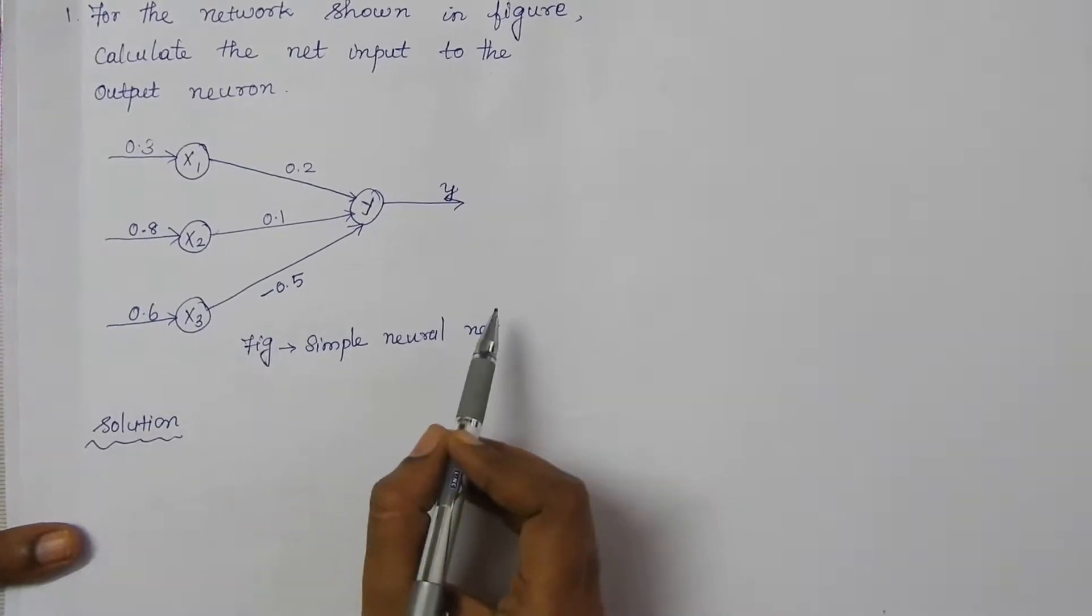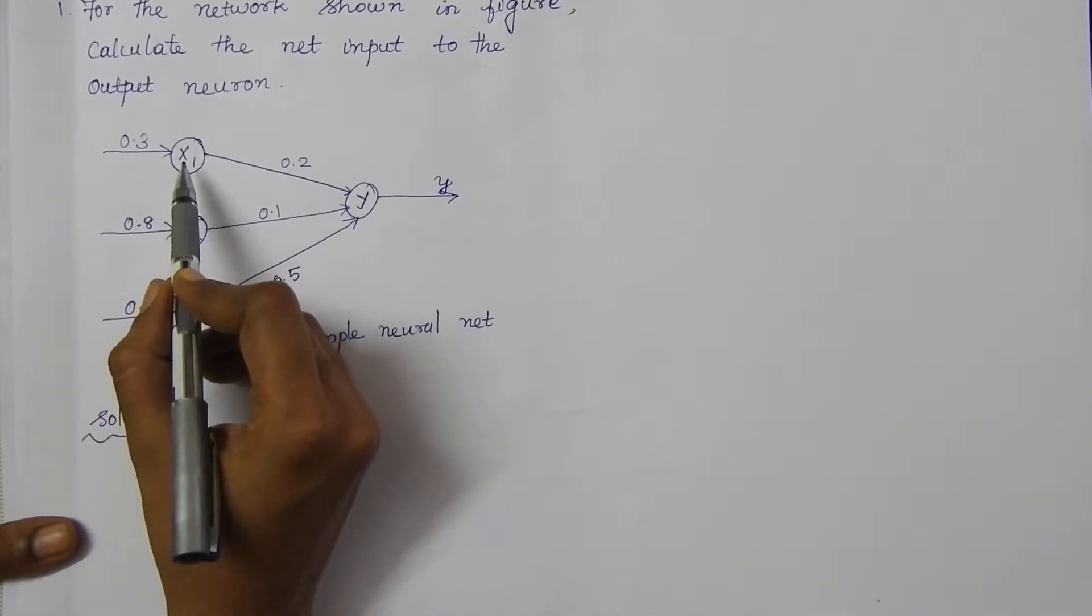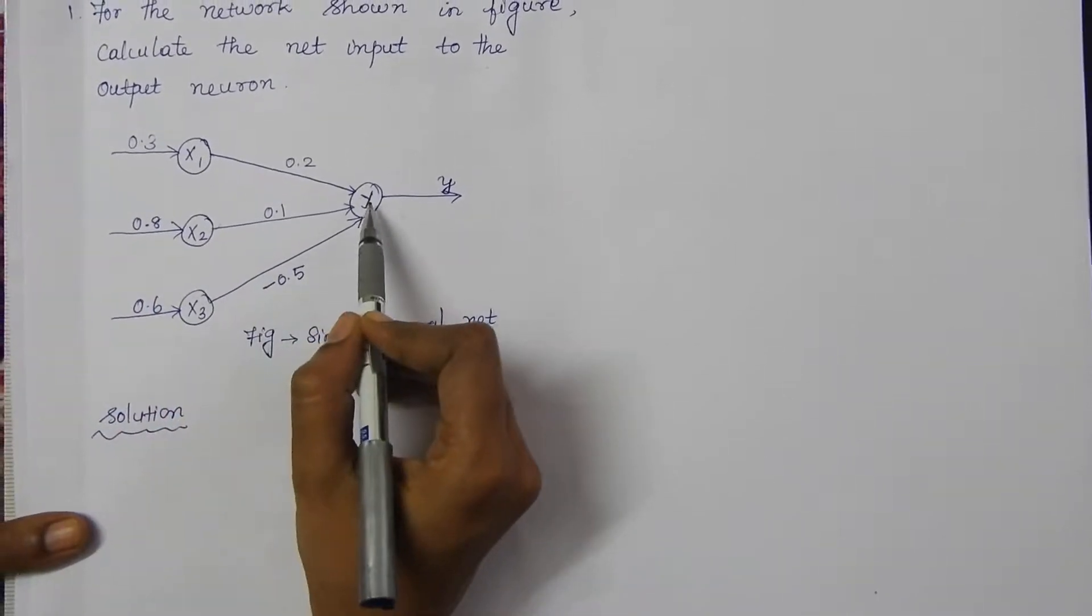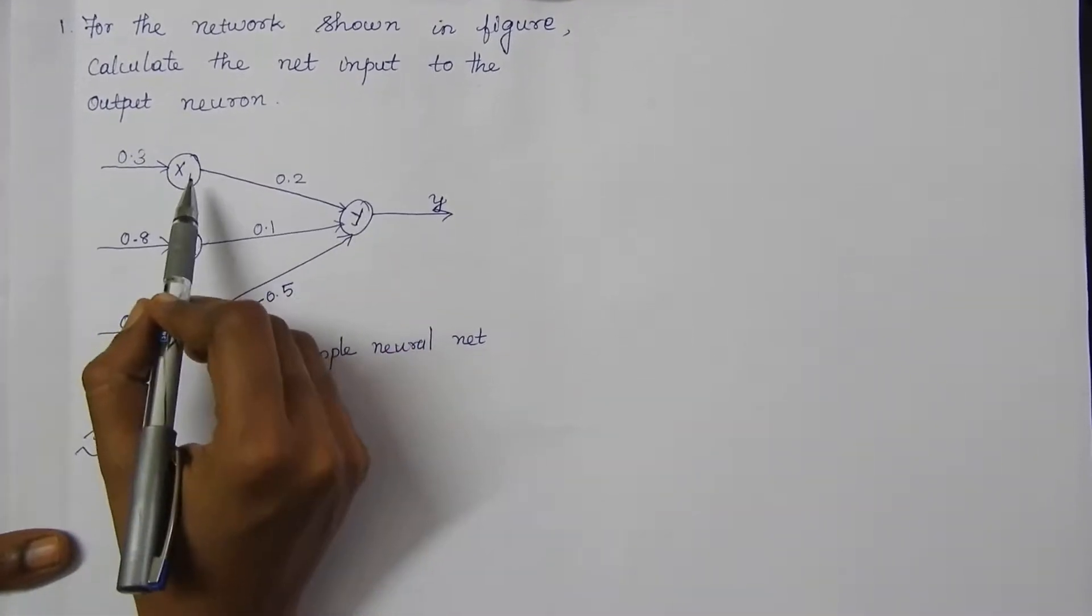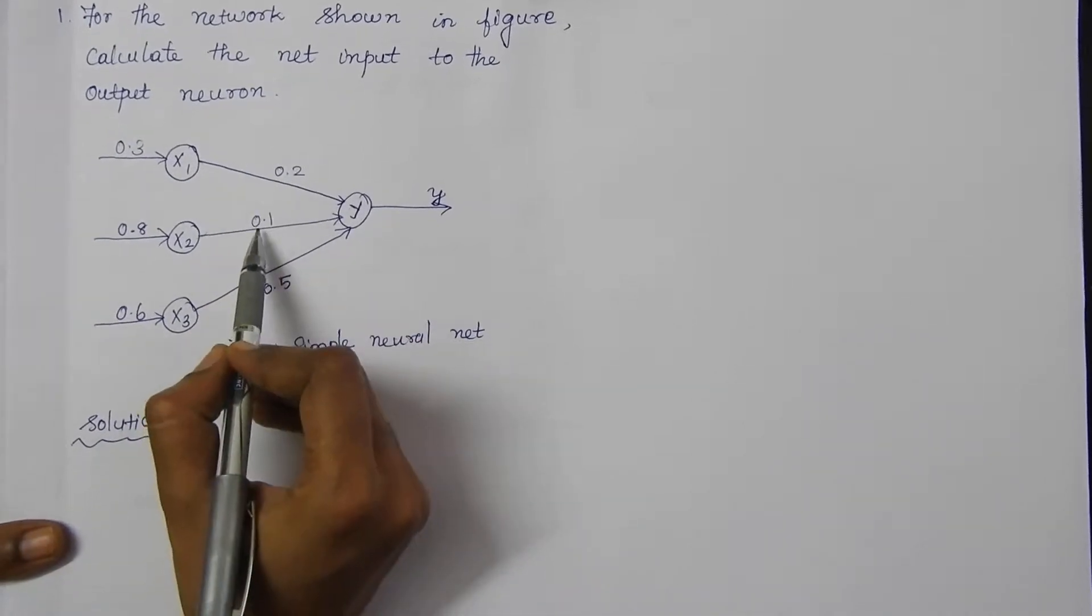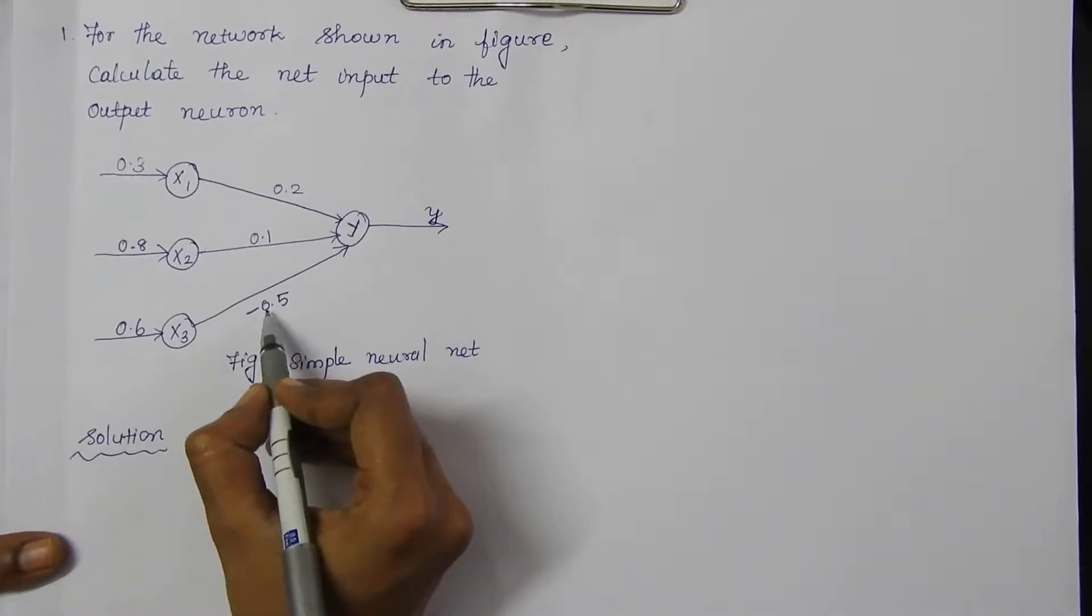Here is a simple neural network with three inputs and one output neuron. Between the input neurons and the output neuron, it has weights 0.2, 0.1, and minus 0.5.